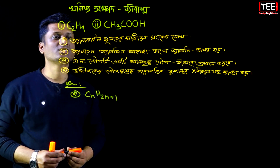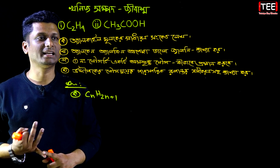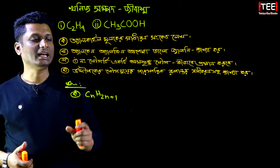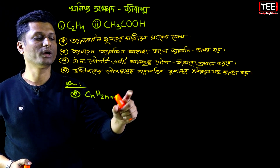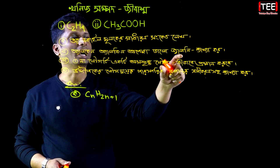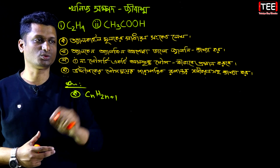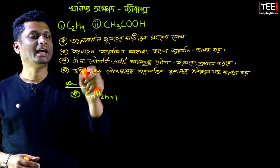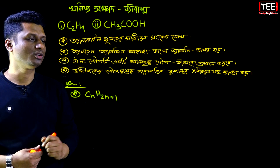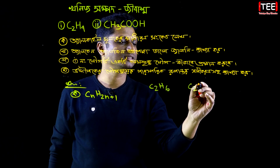We know that alkyl groups have a general structural formula. The general notation for alkyl (L-kine) is: L-kine, L-kine, L-kine. And for Ethine, the structural notation is C₂S₄.